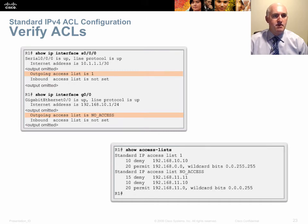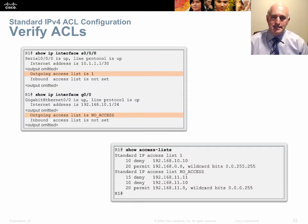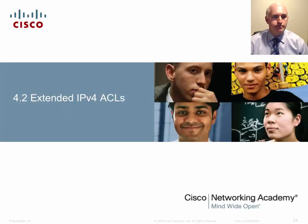To verify ACLs, you can type 'show ip interface' to see if any ACLs are applied to an interface and in what direction. Or type 'show ip access-list' to see what's in the list. You can also abbreviate by adding the name or number, like 'show access-list 1' to show just list one.